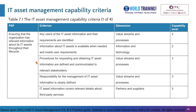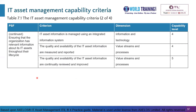At Level 3 for this same PSF, the procedures for requesting and obtaining IT asset information are defined and communicated to relevant stakeholders; responsibility for the management of IT asset information is clearly defined; and IT asset information covers relevant details about third-party services. At Level 4, IT asset information is managed using an integrated information system, and the quality and availability of that information are measured and reported. At Level 5, the quality and availability of IT asset information are continually reviewed and improved.